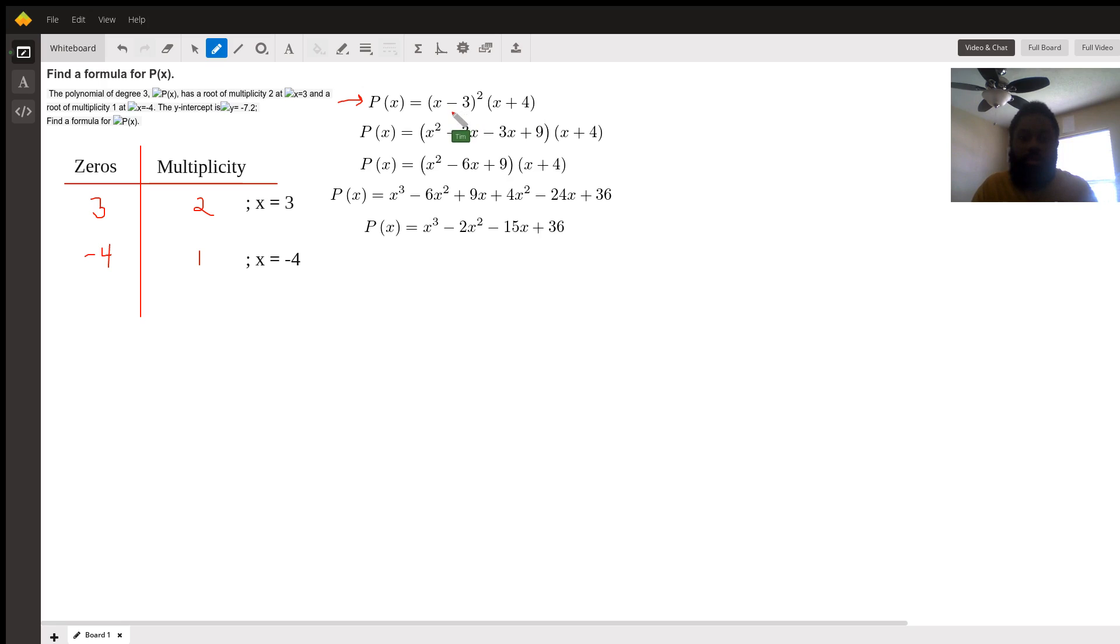Next thing, we expand (x minus 3) squared into x squared minus 3x minus 3x plus 9. Then we add like terms to get here, carrying down the (x plus 4).